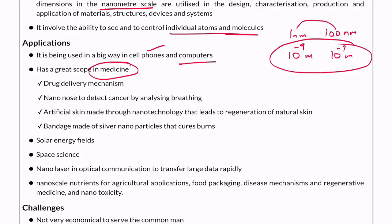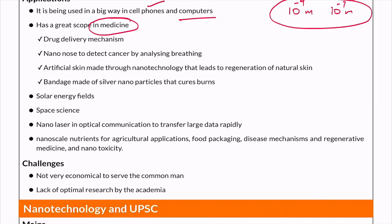For example, in drug delivery mechanisms, we are now talking about targeting cancerous cells directly and treating those cells. Rather than chemotherapy, which can affect healthy cells as well, nanotechnology through targeted drug delivery mechanisms allows us to treat the cancerous cells directly. A device called the 'nano nose' can detect cancer just by analyzing a person's breathing. There is also artificial skin created by nanotechnology which can regenerate natural skin.